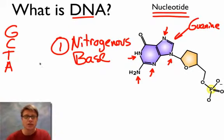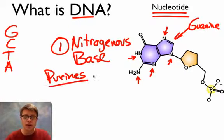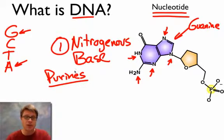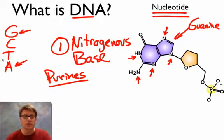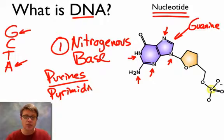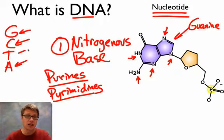Nitrogenous bases come in two different types. Some, like guanine, are called purines — purines have two carbon rings. The purines are guanine and adenine. We also have simpler ones that are not quite as big, called pyrimidines. The pyrimidines in DNA are cytosine and thymine.